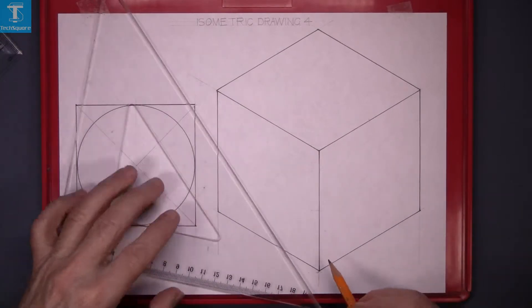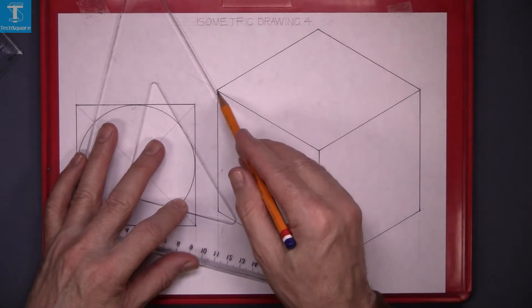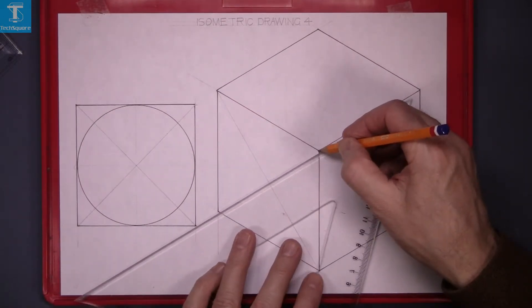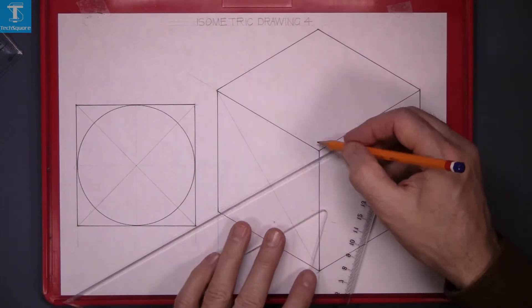So join the diagonals on the quadrilateral. That gets a center point.